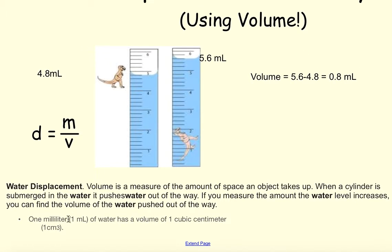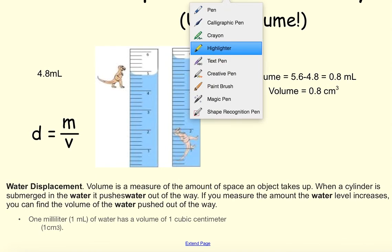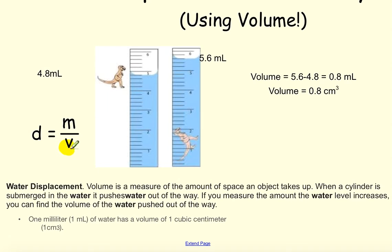Now down below, we found out that one milliliter of water has a volume of one cubic centimeter. So the volume, then, will be equal to 0.8 cubic centimeters. There's our volume. Now, you take a look at my formula. What we've just found, then, is the volume of this object. That would go right here in my density formula, which is mass divided by volume.